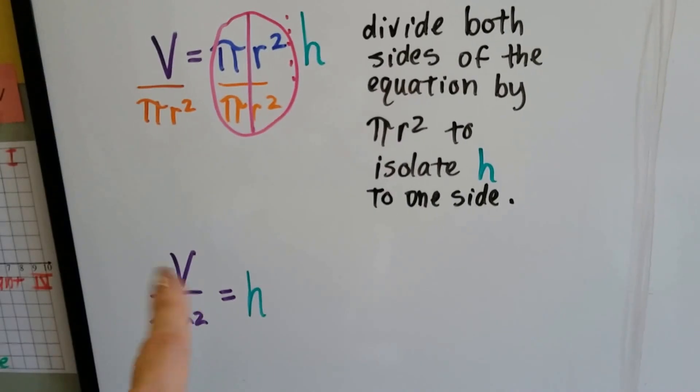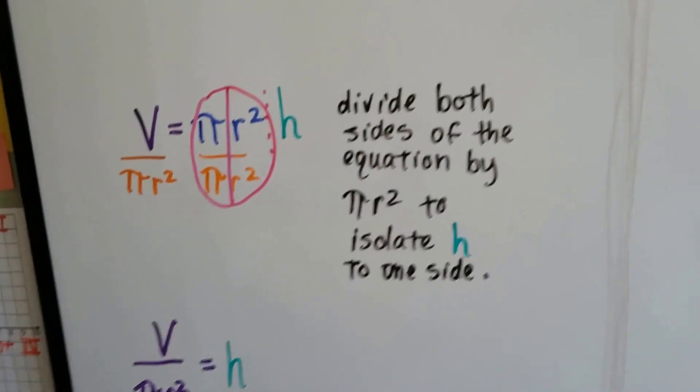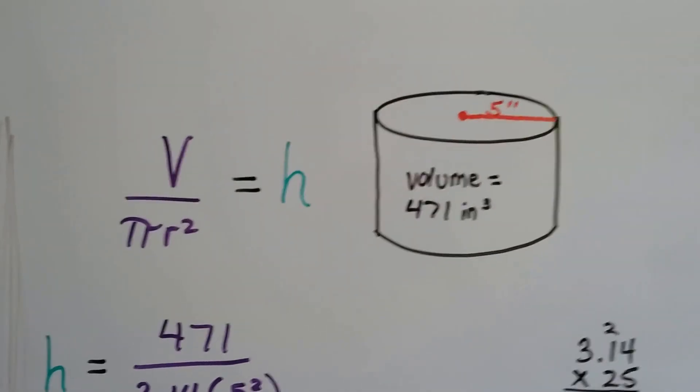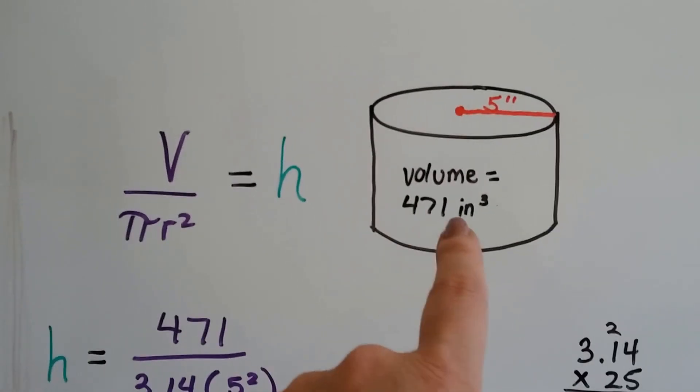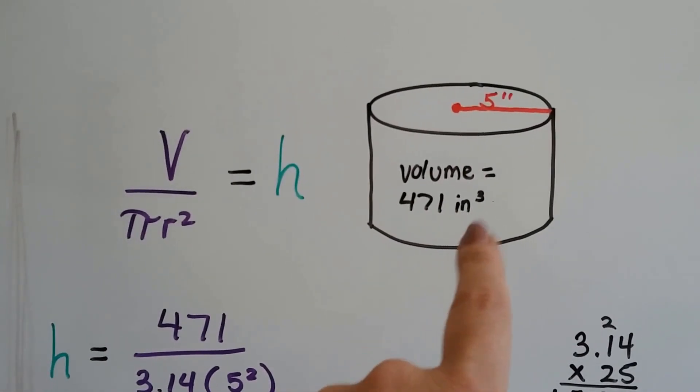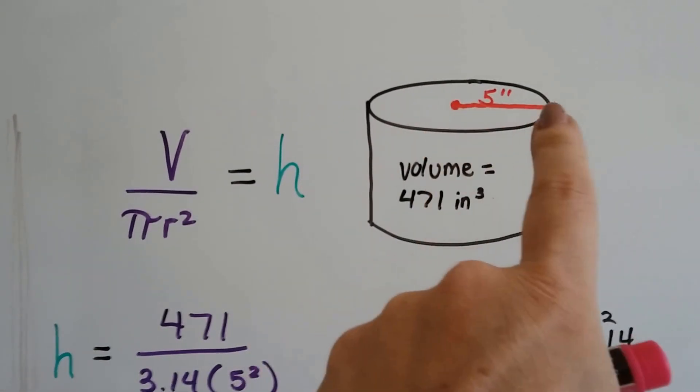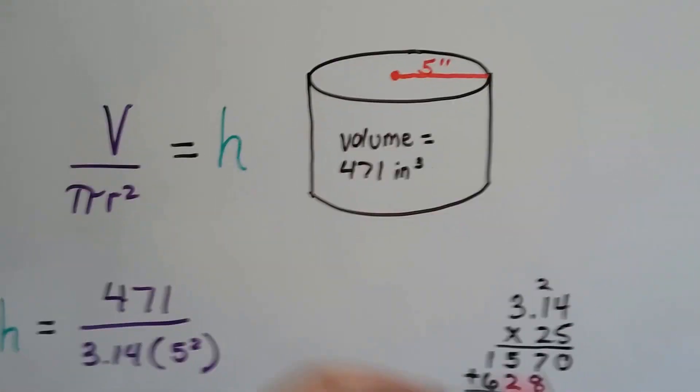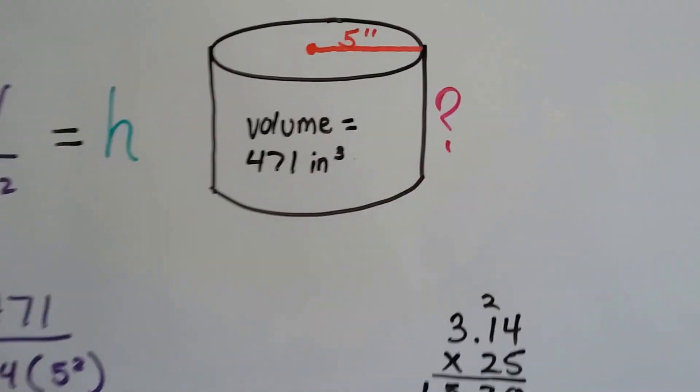Now what we have to do is plug the numbers in. So here's our cylinder. We know the volume is 471 inches cubed, and we know that the radius is 5 inches. We just don't know how tall it is right here. We need to find out its height.